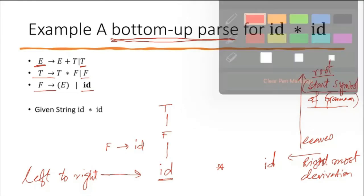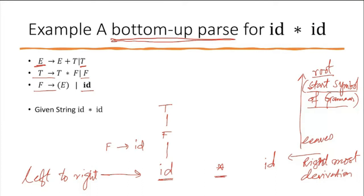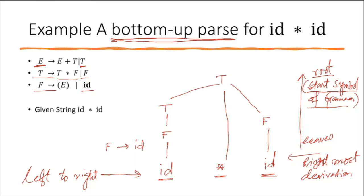Instead, we read the next input symbol, which is star (multiplication sign). We now have T and star in hand. There is no rule whose body is T star alone, so we read the next input symbol, which is id. We reduce this id by F. After doing this, we have T, multiplication sign, and F in hand.